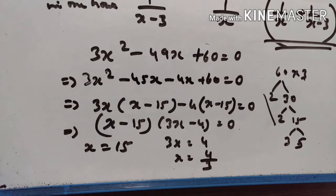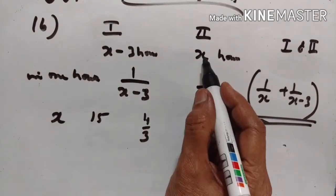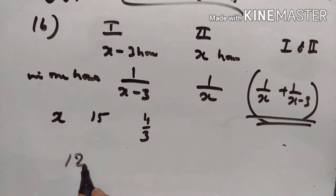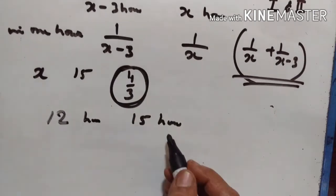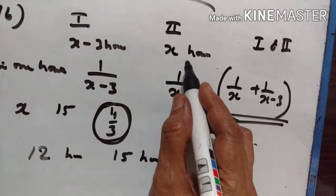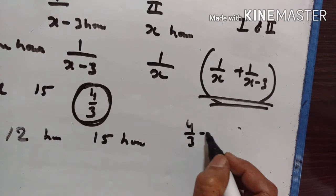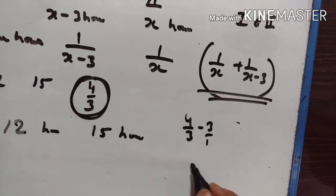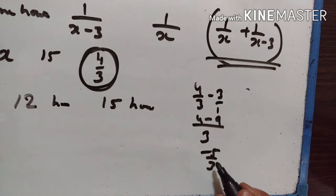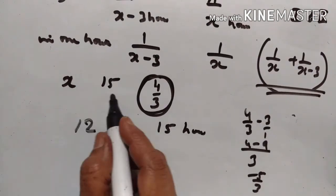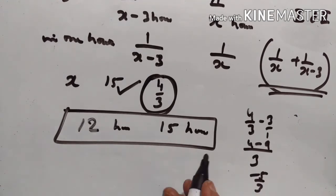If x equals 4 upon 3, then the first pipe takes x minus 3 hours, which is 4 upon 3 minus 3 equals 4 minus 9 over 3, which equals minus 5 upon 3. The time taken cannot be negative. So x equals 15. Therefore the two pipes take 12 hours and 15 hours respectively to fill the cistern.